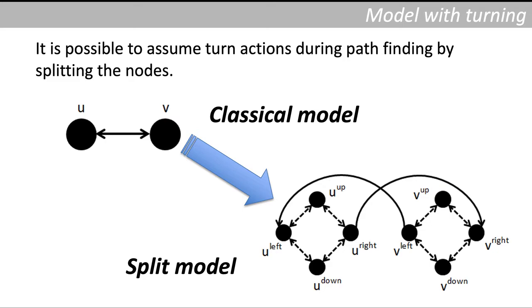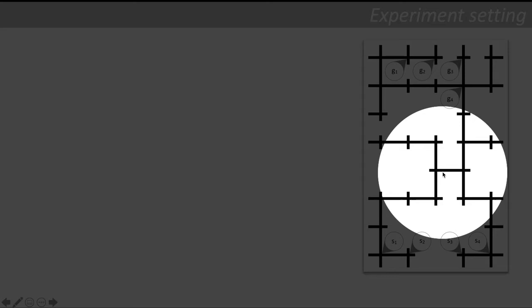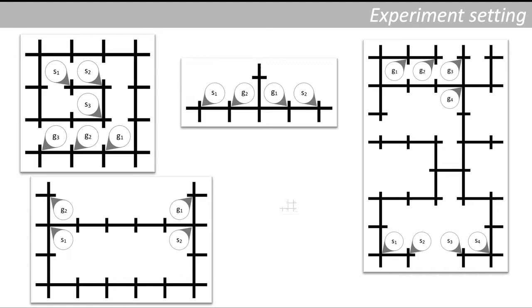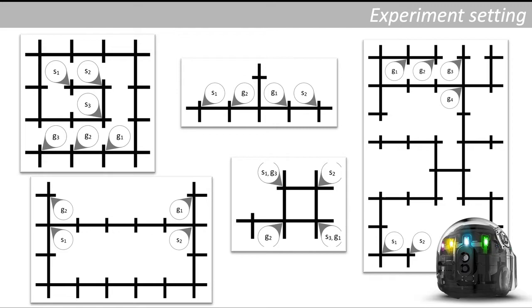So how do these models compare when executed on real robots? We use maps with structures like this one. The robots are starting at the bottom. They want to go up and in this case there is a bottleneck in the middle of the map. For other maps we use maps with many rotations, with very different lengths of paths, or even with swapping of robots. We generated abstract plans according to various abstract models and then we executed these plans on real robots. We used the Ozobot EVO robots that I showed you at the beginning and we measured various parameters like the success of execution and makespan of the execution.